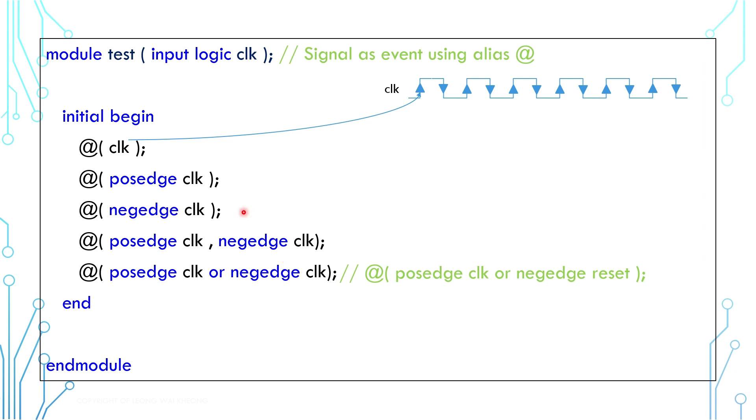Following this example, the posedge will block until here, the negedge will block until here, this will block until here, and this will block until here.